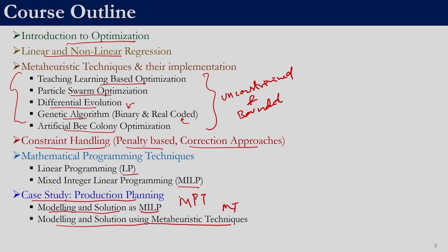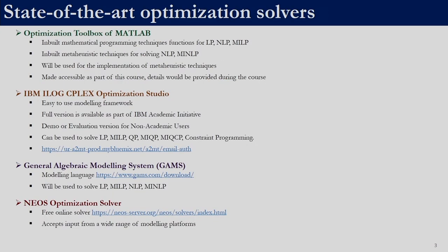We will take a problem which you can consider a real-life optimization problem and show how to solve it with both mathematical programming as well as meta-heuristic techniques, so that you can understand the strength and weakness of both. As part of this course, we will be introducing you to three different state-of-the-art optimization solvers: the optimization toolbox of MATLAB, IBM iLOG CPLEX Optimization Studio, and General Algebraic Modeling System GAMS, and we will also look at the NEOS optimization solver.